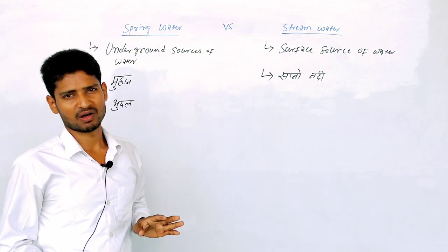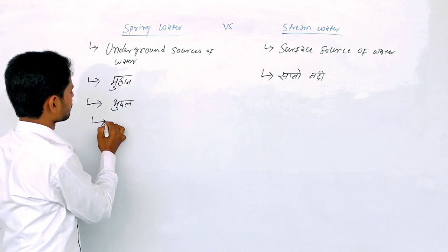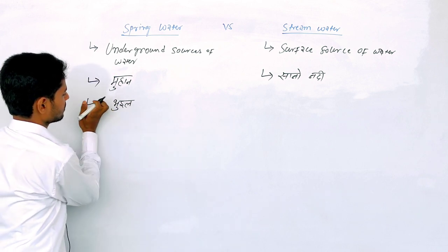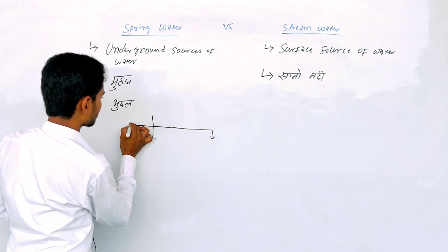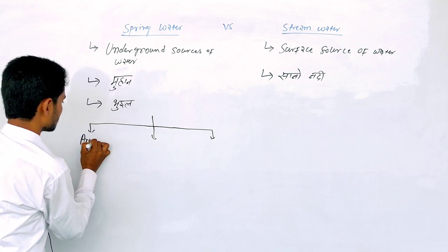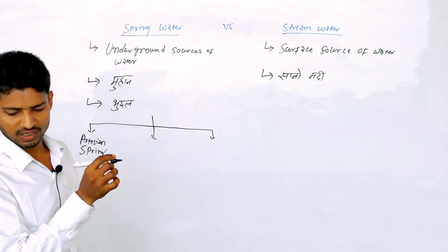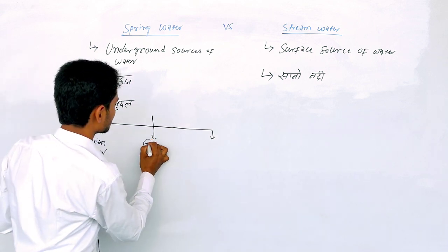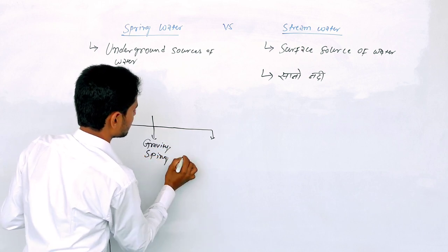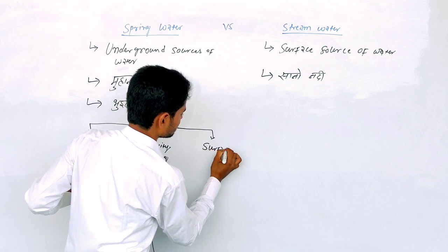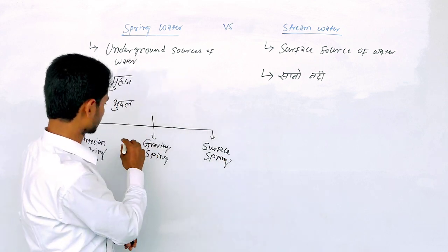Spring has 3 parts. This is the artesian spring, then the gravity spring, and the surface spring. These are the 3 parts.